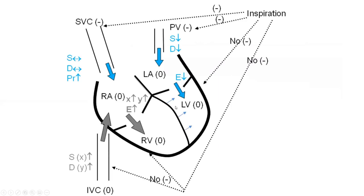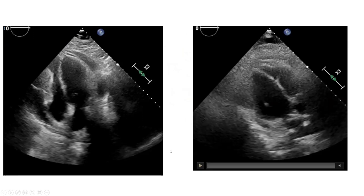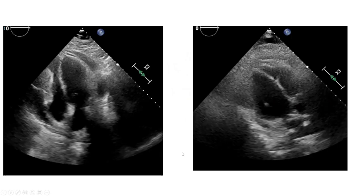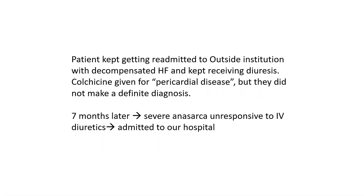Annulus inversus is explained by the fact that the lateral mitral annulus is constrained by the thick stuck pericardium. In diastole, to compensate for the impaired lateral elastic recoil, the medial annulus recoils excessively, so medial E' is higher than lateral E'. The diagnosis is already established for this patient. But you need to be alert for this diagnosis rather than simply diuresing and sending home on Lasix. Unfortunately, that's what happened — the patient kept getting readmitted with decompensated heart failure and kept receiving diuresis.